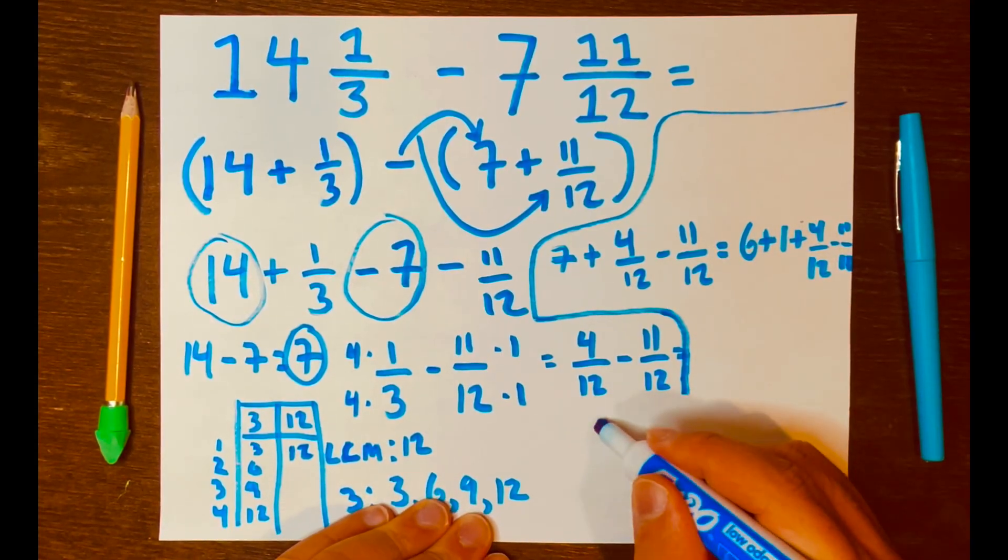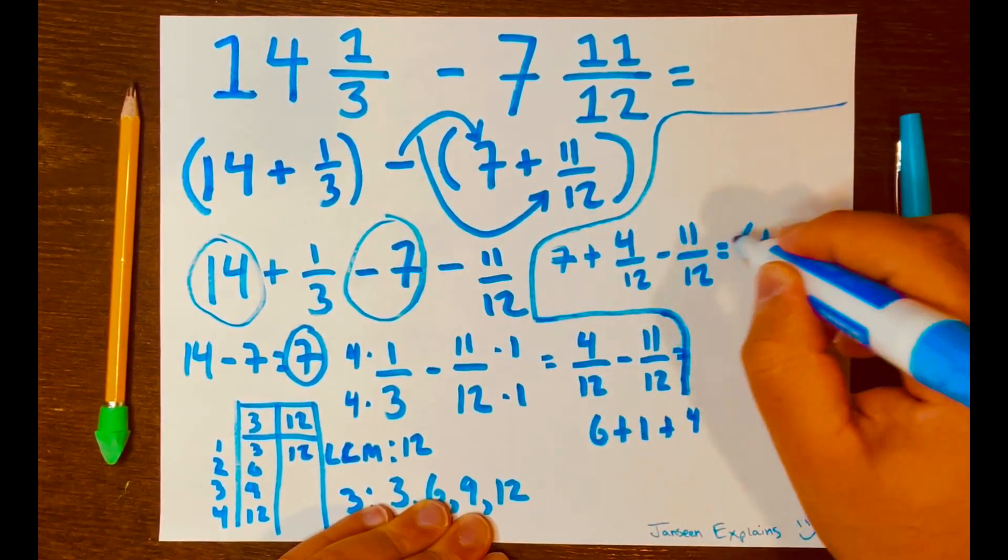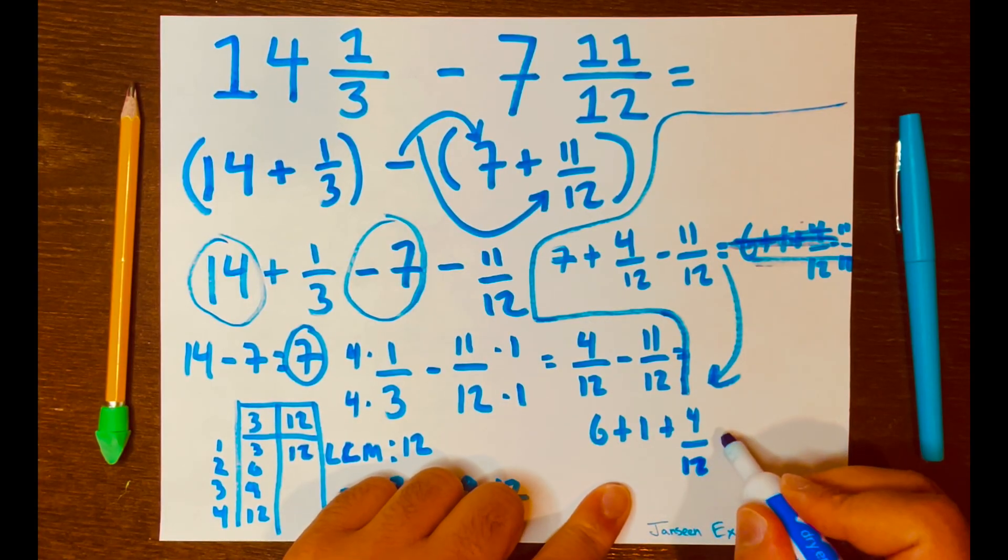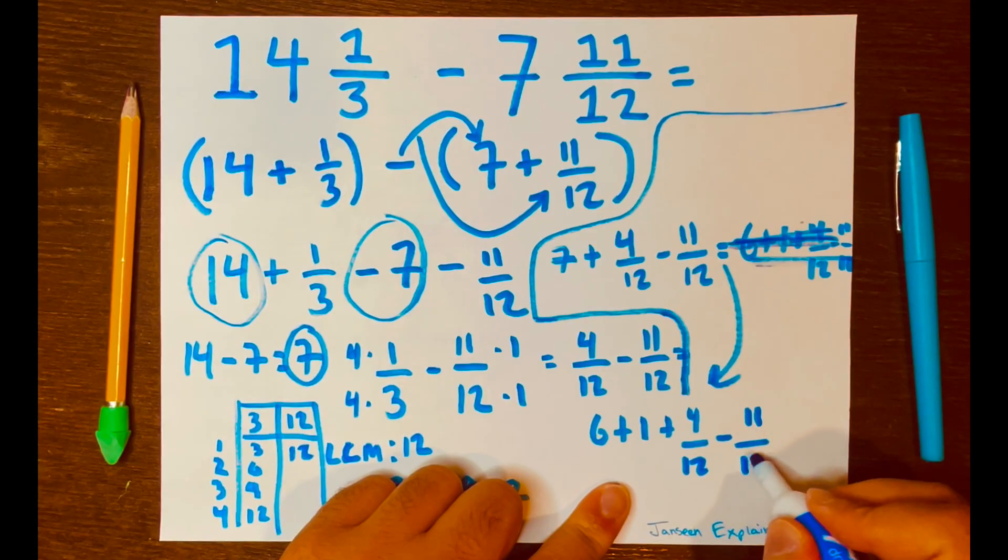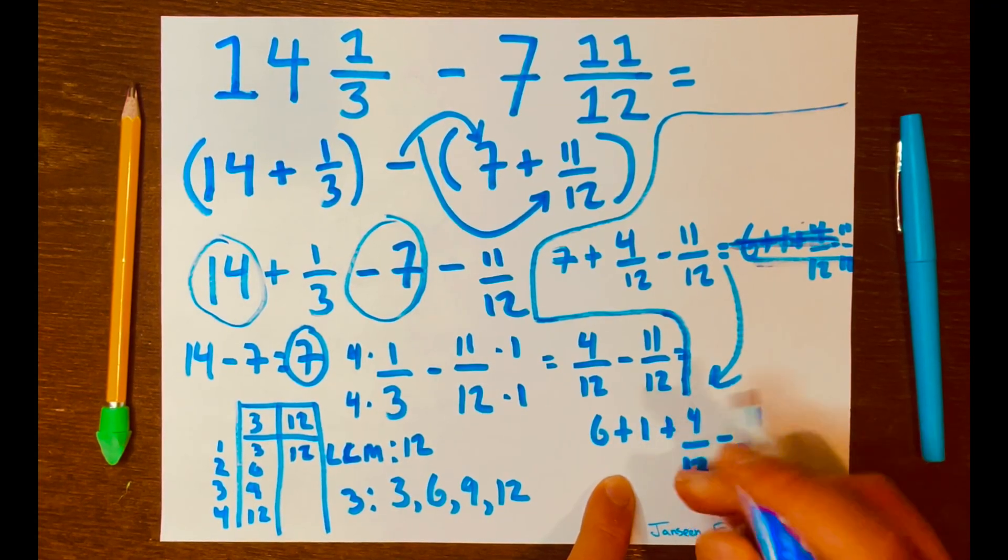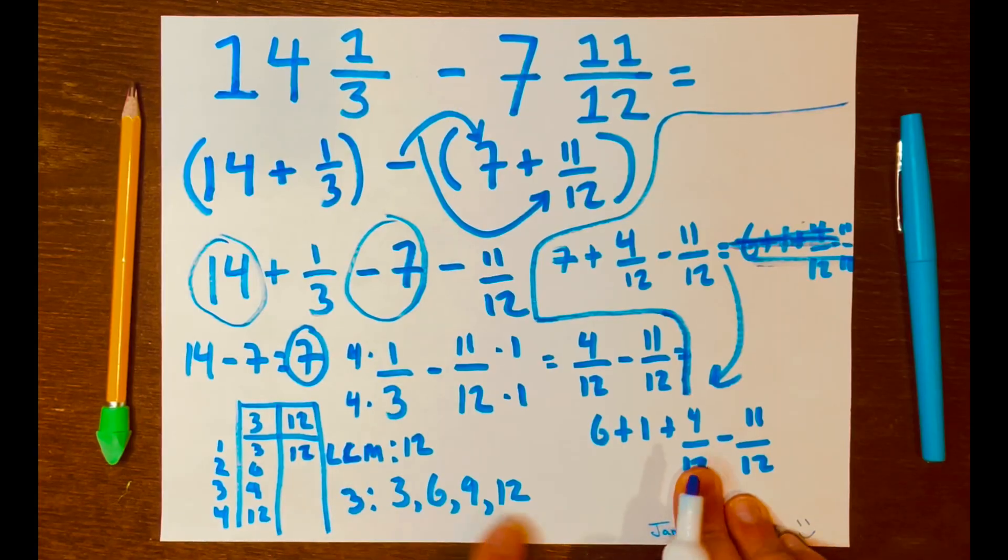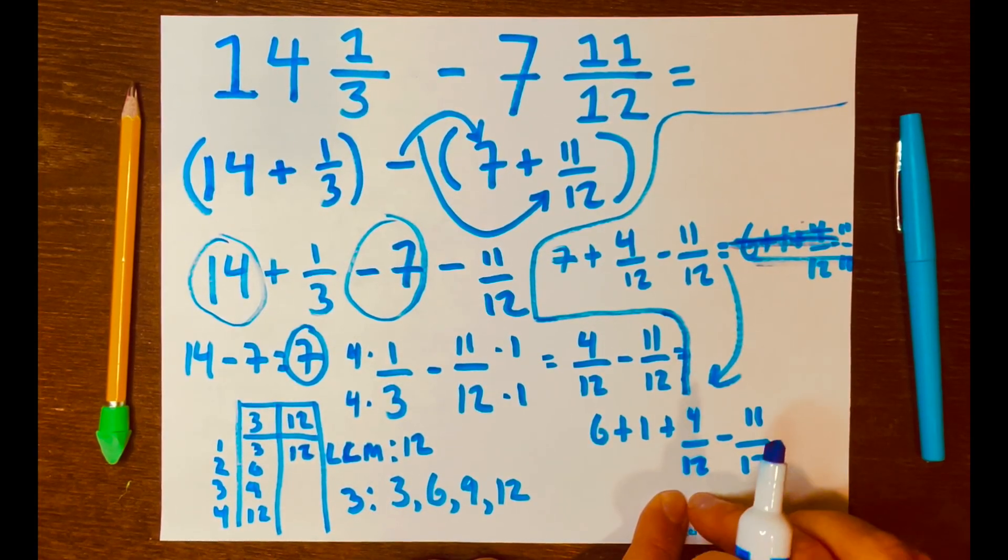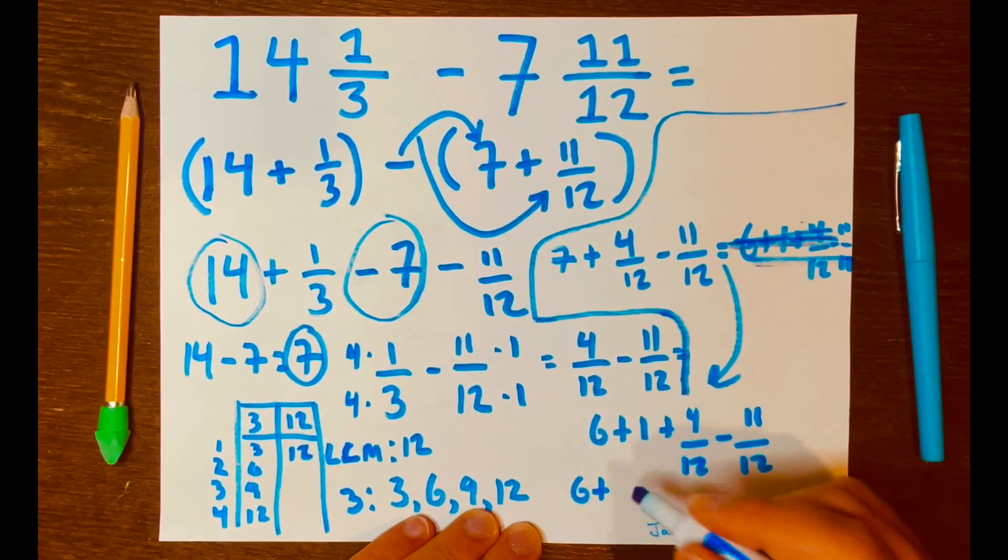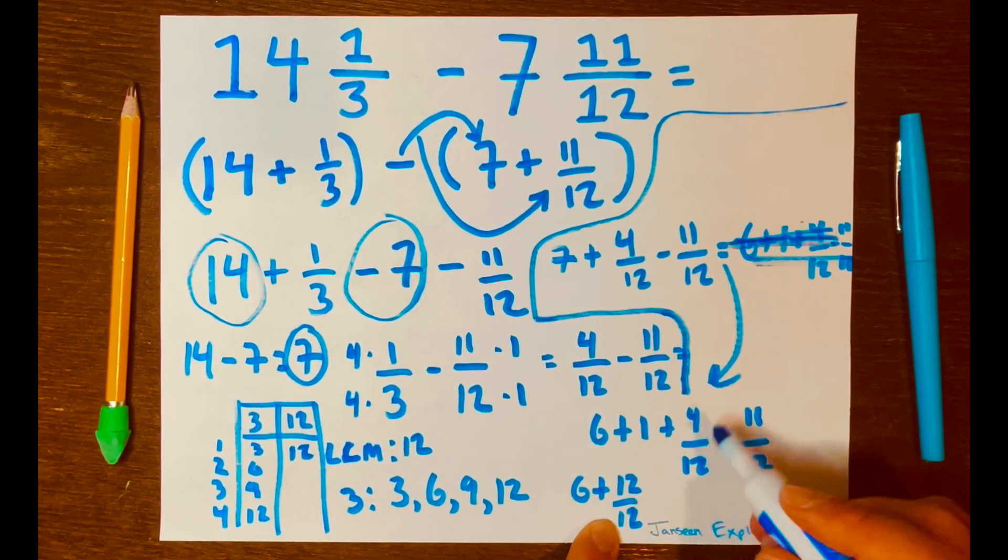Let me just write it here. 6 plus 1 plus 4 over 12 minus 11 over 12. And, then I'm going to replace that 1 with 12 over 12, because that's our LCM, or now we have our new low common denominator. So, we'll write 6 plus 12 over 12, right? And, then we're going to add 12 over 12 to this 4 over 12.